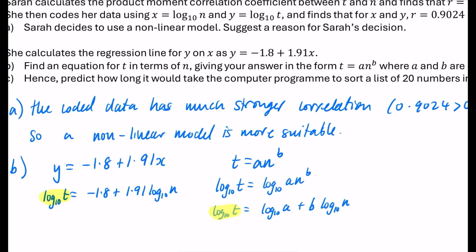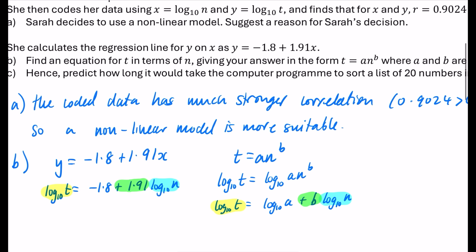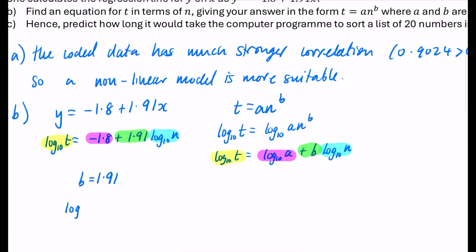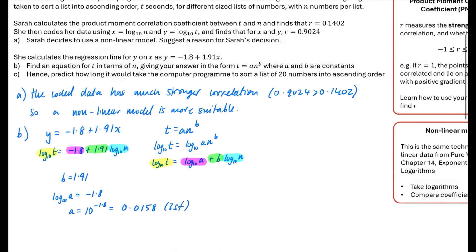And this is where we do the comparing coefficients part. I'm going to compare each part. So we've got the log base 10 t there. Then the log base 10 n is here and here. That means that the 1.91 or the plus 1.91 goes with the b. So immediately I can write down that b is 1.91. And then the last part is that the minus 1.8 must be the log base 10 of a. So log base 10 of a is minus 1.8. So using our knowledge of logarithms, that is 10 to the power of minus 1.8. Probably just going to do three significant figures because that's the standard thing that we would probably use in this. And 10 to the power of minus 1.8 is 0.0158 to three significant figures.